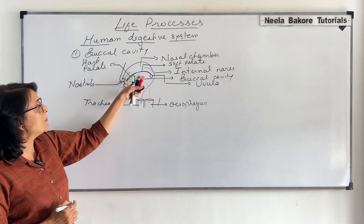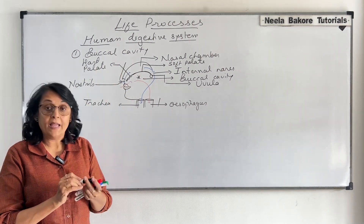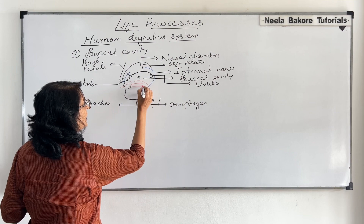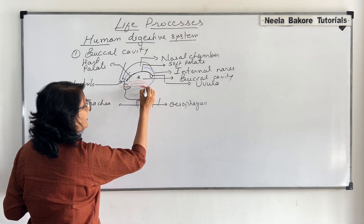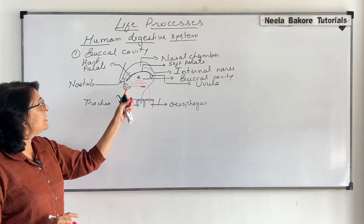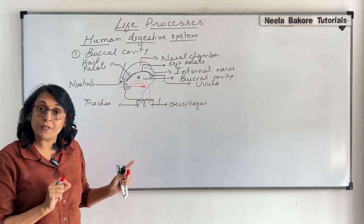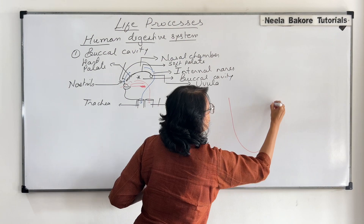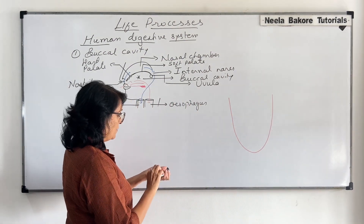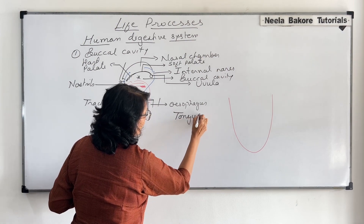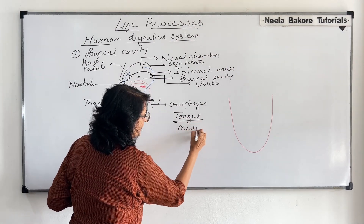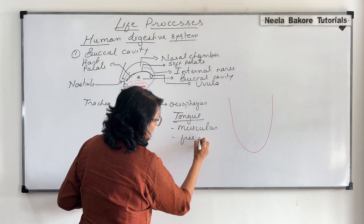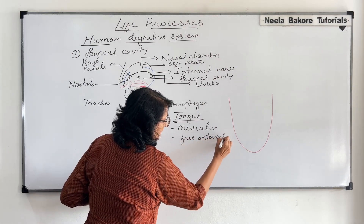So palate is a separation between the buccal cavity and the nasal chamber. The second structure we want to talk about is the tongue. Our tongue is attached on the back side on the lower part and it is free anteriorly, so we can see the tip of our tongue which is free. The tongue is a muscular structure that is free anteriorly.